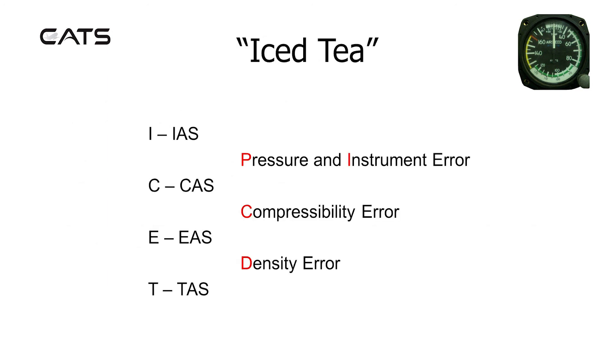There is a way of remembering these using the mnemonic ICED-T. I-C-E-T stand for indicated airspeed, calibrated airspeed, equivalent airspeed, and true airspeed.